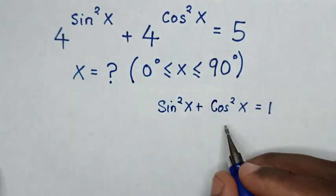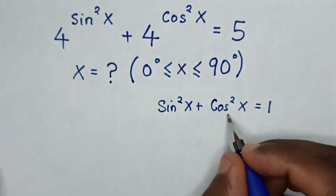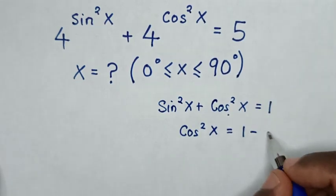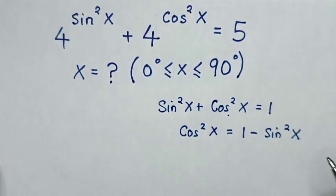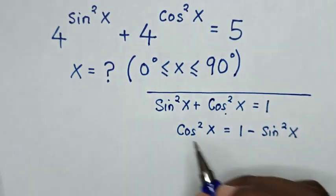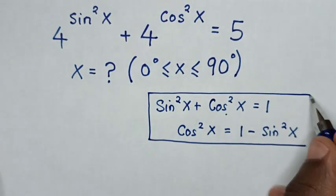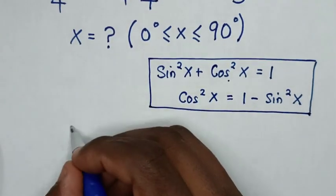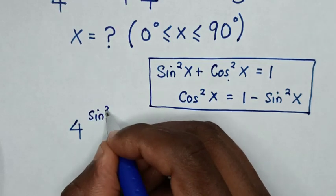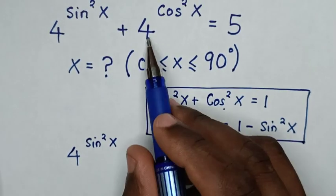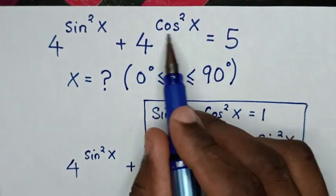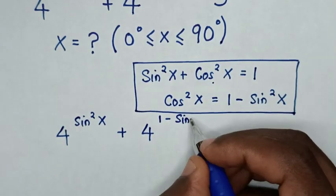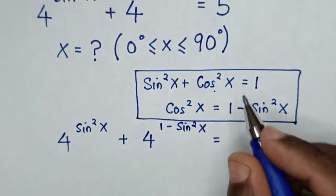From the power of cos square x, we take sine square x to the right side, so cos square x is equal to 1 minus sine square x. In the next step, our equation will be 4 power of sine square x, plus 4 power of cos square x — which is the same as the power of 1 minus sine square x — equal to 5.